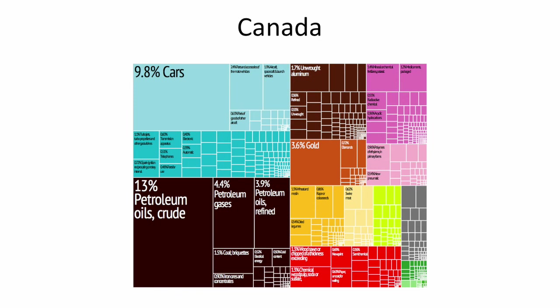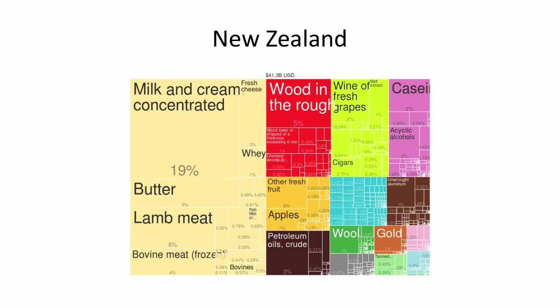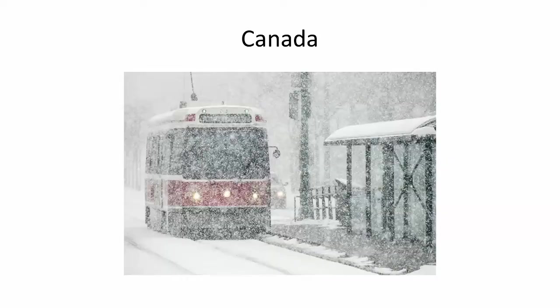Canada's GDP output is mostly industrial and oil, though we also have forestry, minerals, and mining. New Zealand's economy is much more agricultural — there are differences and some similarities. You have more wine than we do, so keep sending it our way.